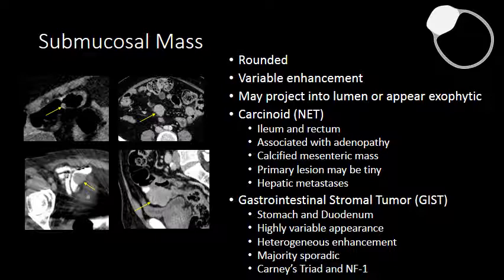Carcinoid tends to metastasize to the liver. Gastrointestinal stromal tumor has a highly variable appearance. It's most commonly seen in the stomach but is also seen in the duodenum. It tends to have a little bit more of a lobulated margin than carcinoid tumors. It's not as common to have metastatic disease from gastrointestinal stromal tumor as it is from carcinoid tumor. Most gastrointestinal stromal tumors are sporadic, but there is an association of GIST with Carney's triad and with NF1.